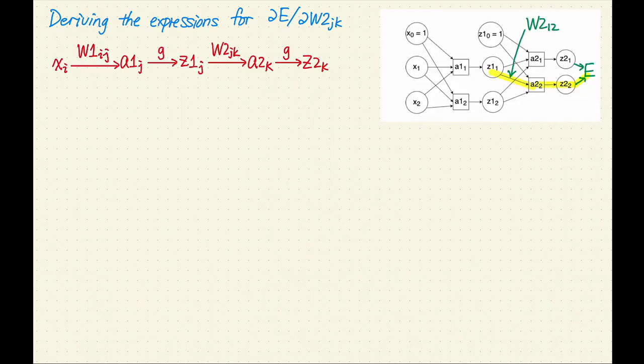To remember what the network looks like, you can look at the picture on the right or the chain on the left. The chain is a simpler illustration of how the values flow through the network from inputs to outputs. In the picture on the right, I've highlighted one path, the one for the weight W2 sub jk.